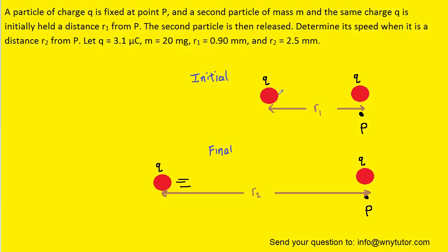Now initially because this charge here is being held, there's no kinetic energy. The only energy present is the electrical potential energy which we know follows this equation. We have K multiplied by the two charges divided by the distance between them. We can actually simplify this and make Q times Q equal Q squared.